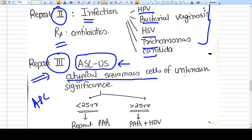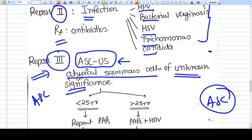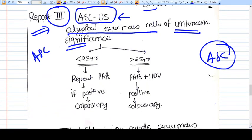Report number three is ASC-US—atypical squamous cells of unknown significance. We have ASC present, but we don't know the significance. The ASC does not look like confirmed atypical cells or carcinomatous cells.